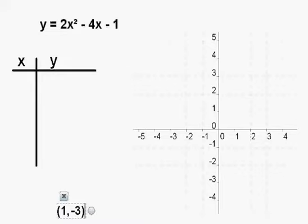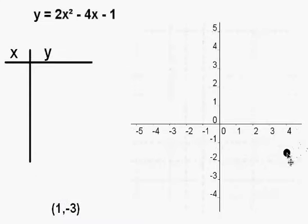So I've found then that the vertex is right here, 1 negative 3. Make that 1 negative 3 right here.